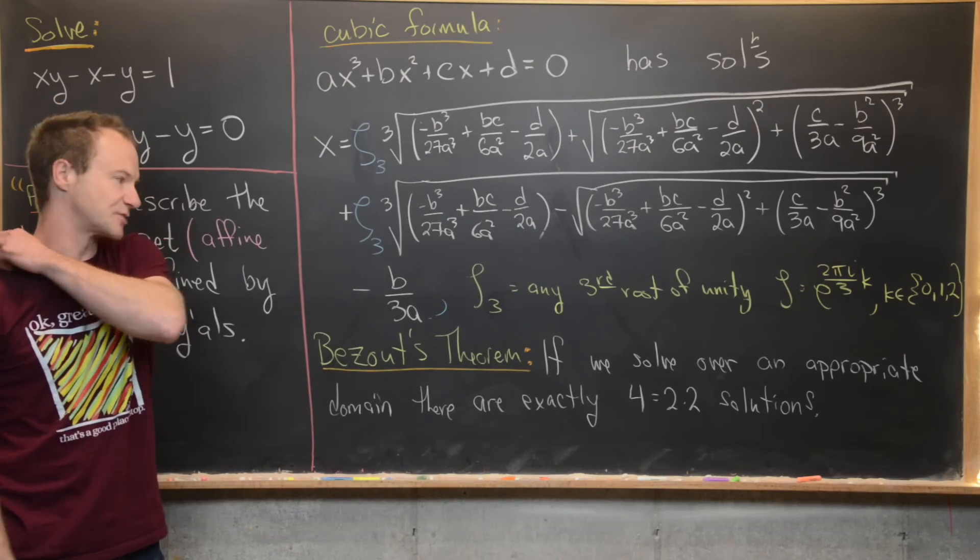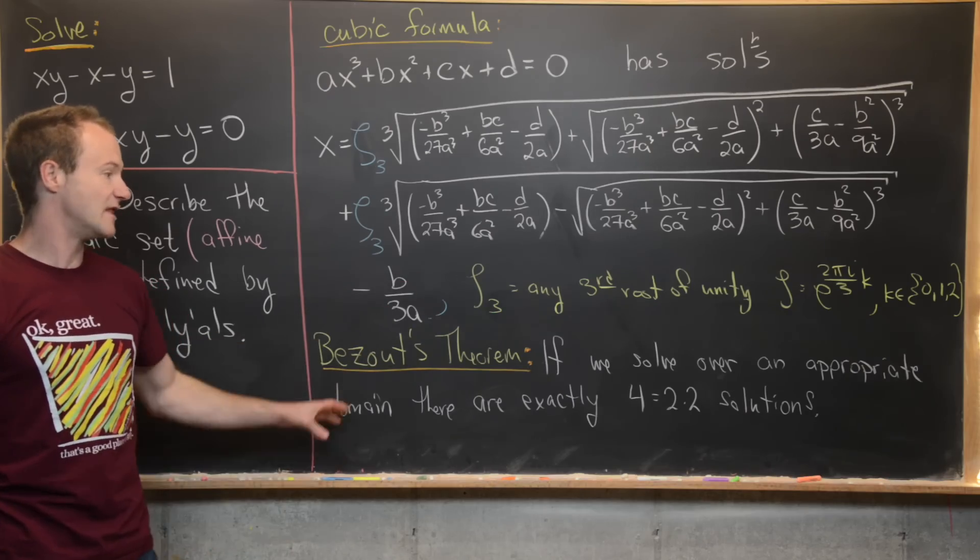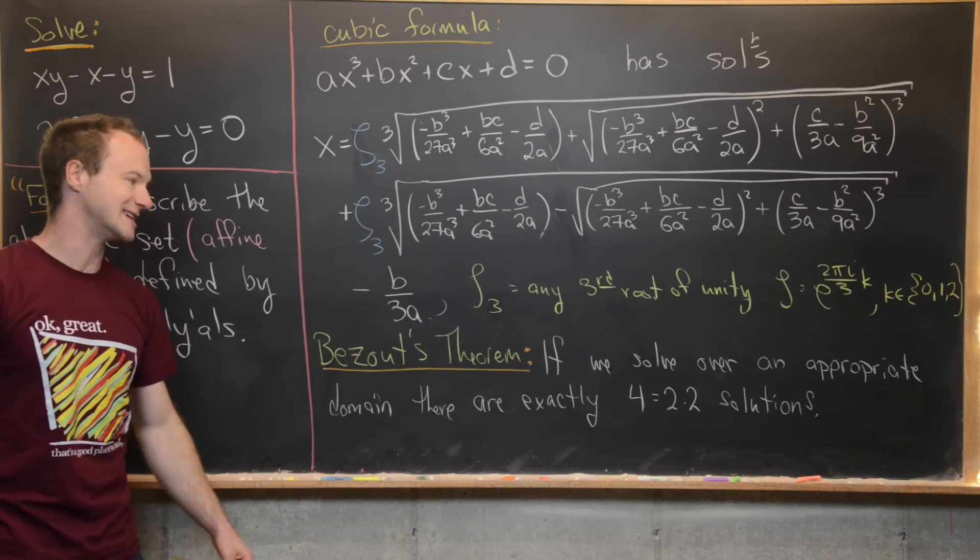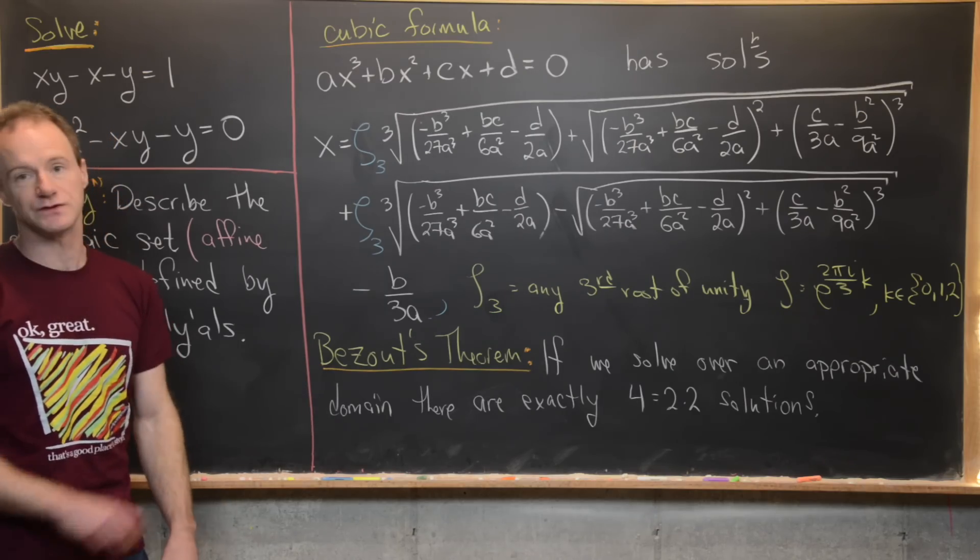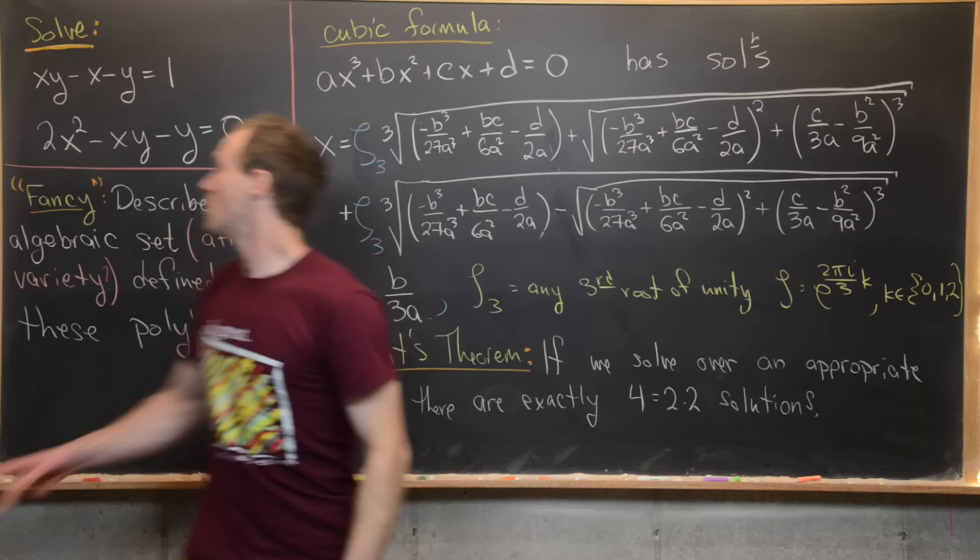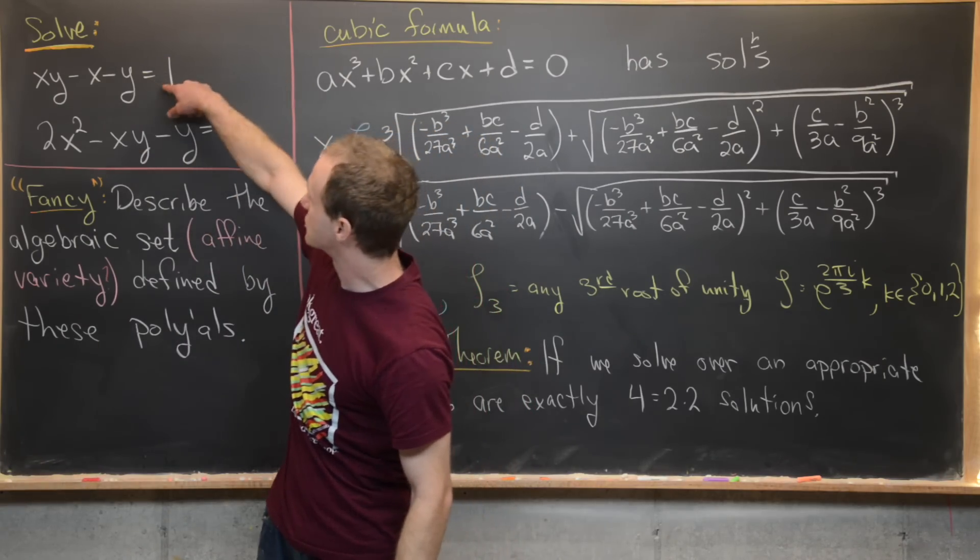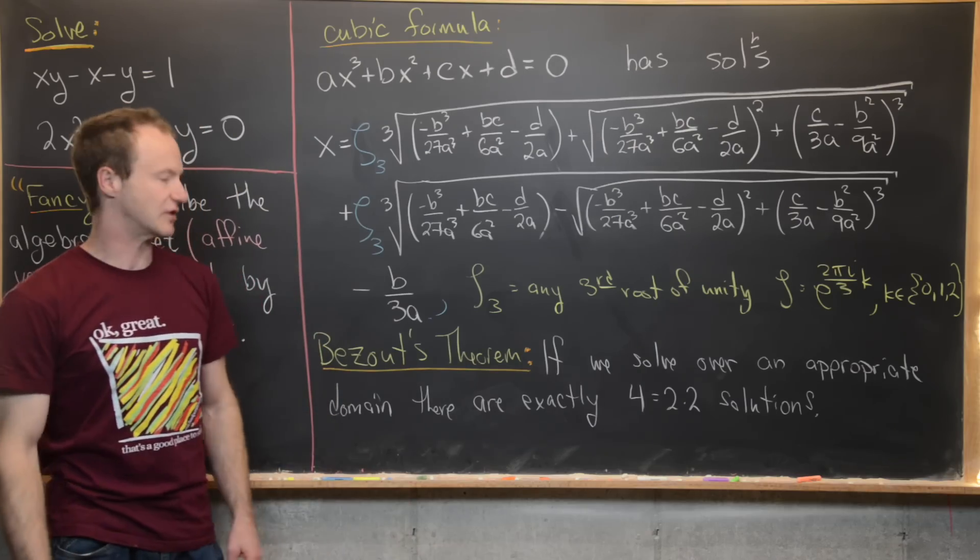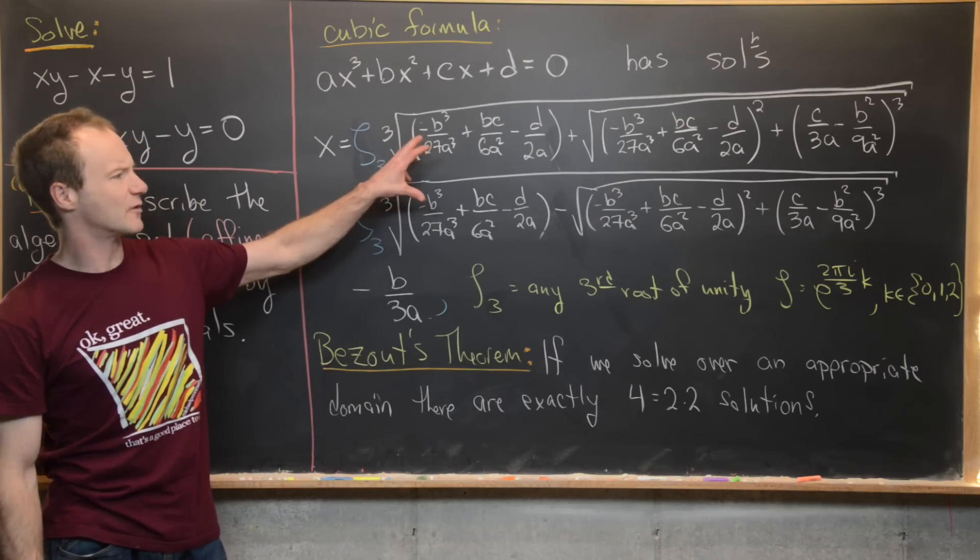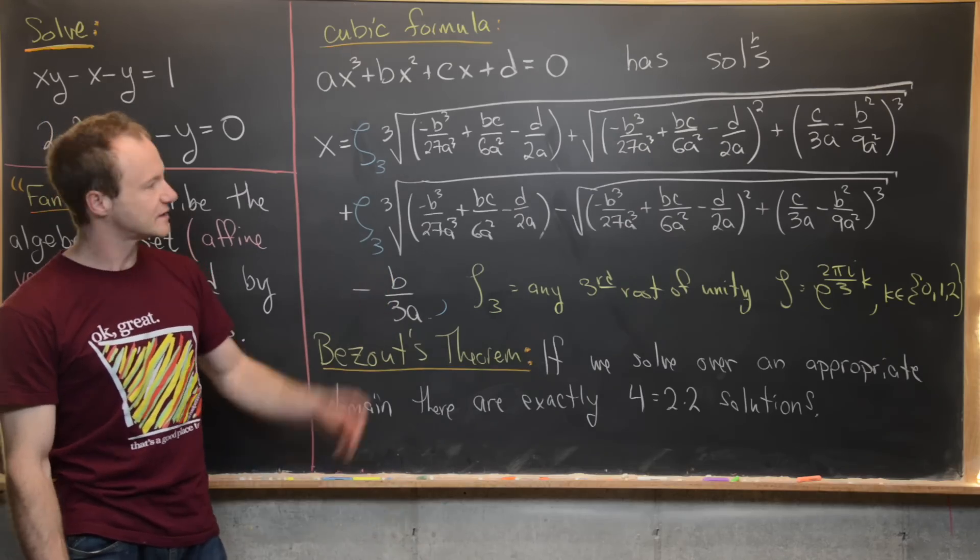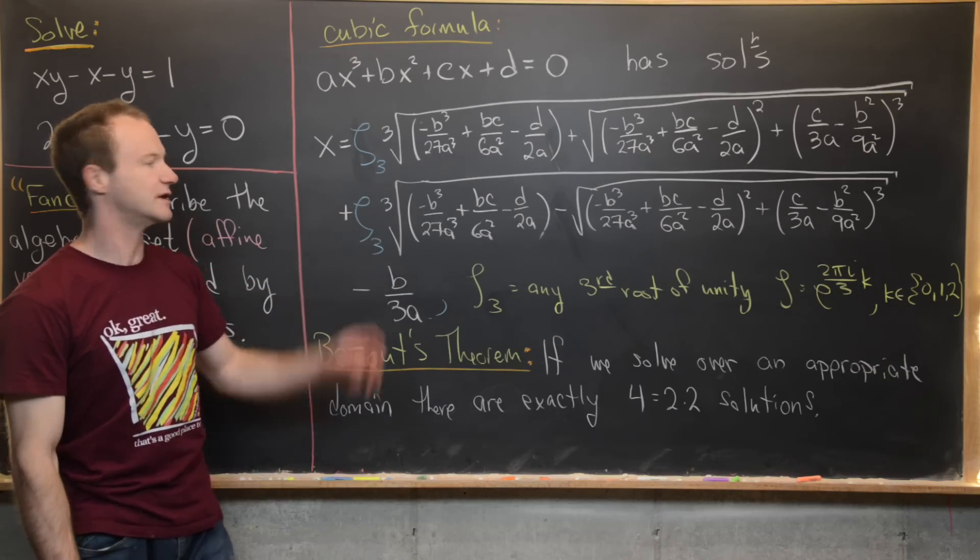And then there's this other theorem from algebraic geometry that says if we solve this over an appropriate domain there should be exactly 4 = 2 × 2 solutions. This is known as Bezout's theorem. So why is 2 × 2 important? Well we've got two polynomials and here this is degree 2 and this is degree 2. So you're multiplying the degree of the two polynomials. But look we only have room for three solutions at this point.